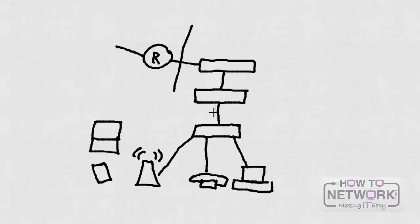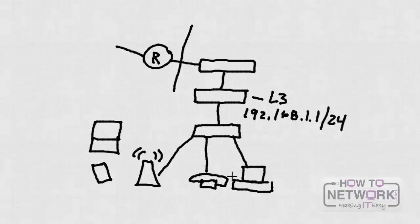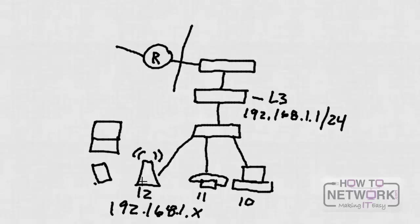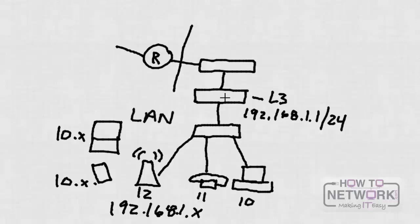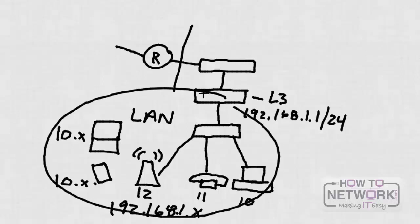The distribution layer switch is often a layer 3 switch, where your gateway is. Systems on your local area network are generally on the same subnet — for example, 192.168.1.0/24, with hosts at 1.10, 1.11, and the wireless access point at 1.12 for management. The wireless access point may extend another network that assigns IP addresses to wireless devices. Even with different subnets, this would all be considered part of your local area network.